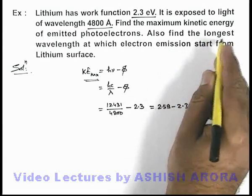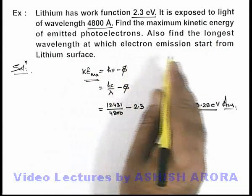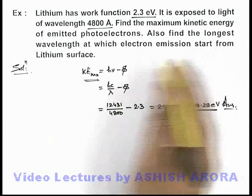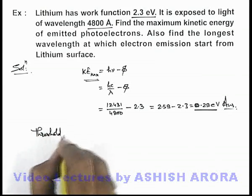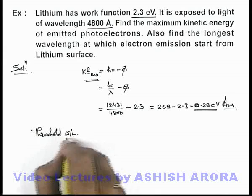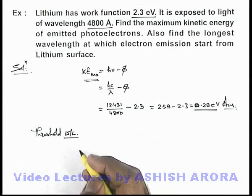Now if we wish to find out the longest wavelength at which electron emission starts, this is basically the threshold wavelength, which is the longest wavelength at which photoelectric emission starts.